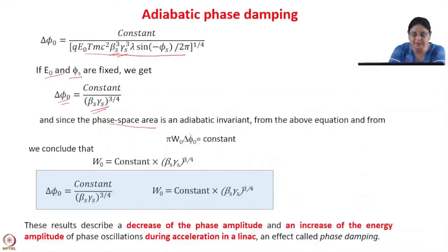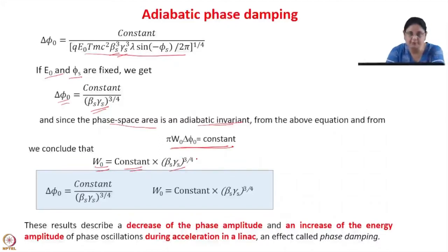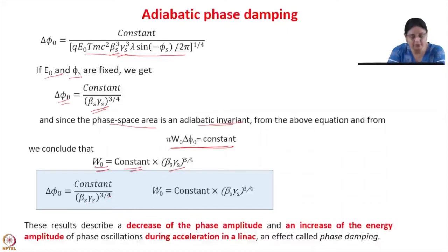Substituting these values, we get that this term equals a constant. From here we can write for delta_phi_0 that it equals a constant times a term in the denominator. We see that in this expression all terms in the denominator are constant except beta and gamma, which are varying slowly because the acceleration rate is small.